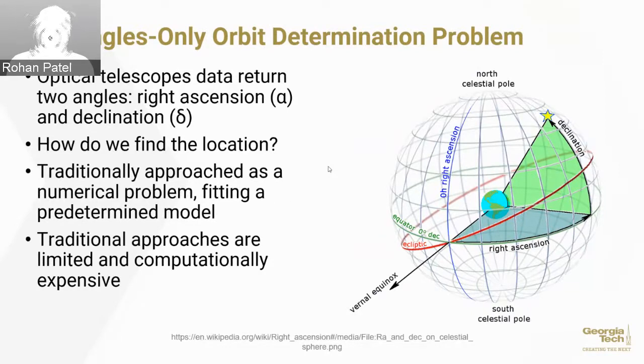This approach works well in some cases, but in other cases it doesn't because it requires assumptions about the orbit. And crucially, it's computationally expensive. You have to do this every single time you take images of something, and the computational intensity is the same every time.